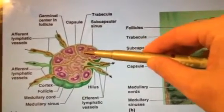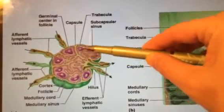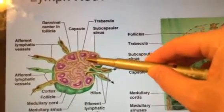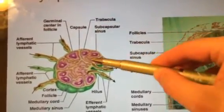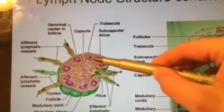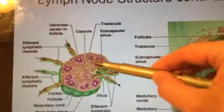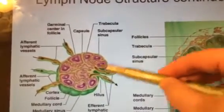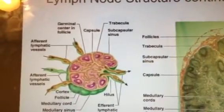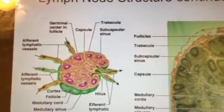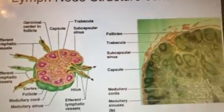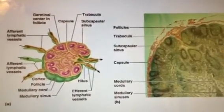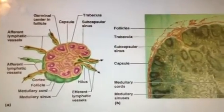You can see the trabeculae — the walls inside — sectioning everything off. This is advantageous because if you want to fight, you back somebody up against a wall and have a better chance to knock them out. That's what the lymph node does: it uses these walls to help kill bad bacteria, infections, cancer cells, and that type of thing.